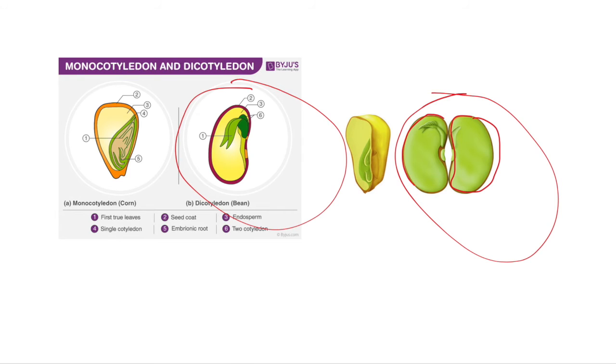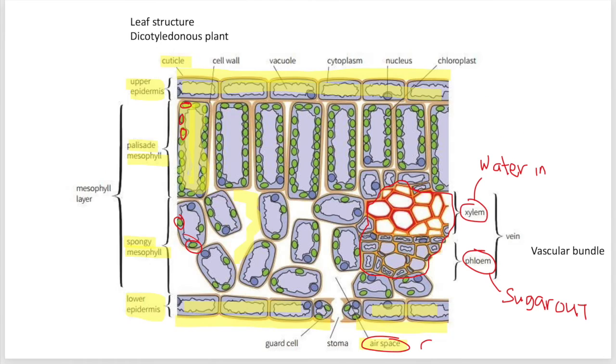There's also monocotyledonous, but you don't have to worry too much about that class of plants. Plants absorb carbon dioxide from the stomata. Stomata is on the bottom part of the leaf, so it doesn't get clogged with dust and water if it's at the top.